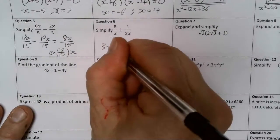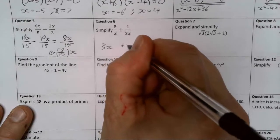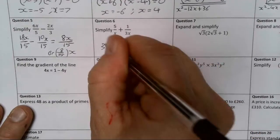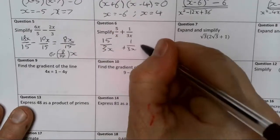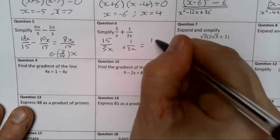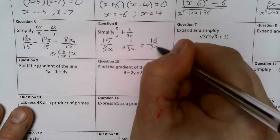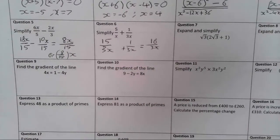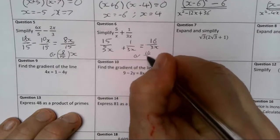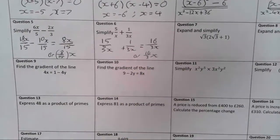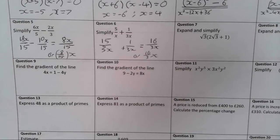Common denominator here should be 3x. This means I don't need to do anything to the second one, but I do to the first. Times by 3, times the top by 3. 15 over 3x plus 1 over 3x gives me 16 over 3x, or 16/3x, or 5 and 1 thirds x if you want.